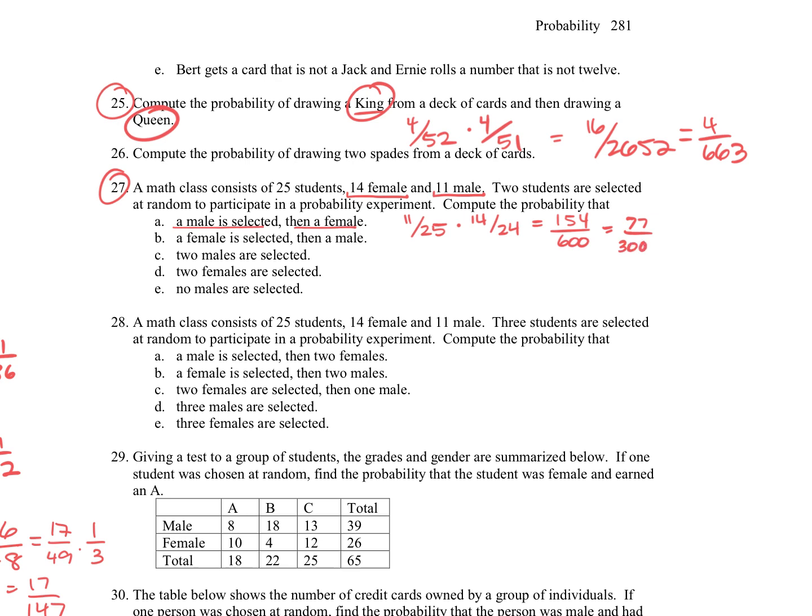Next, we have a female selected, then a male. Well, it's really the same situation. The numerators will look different for a second, because there's 14 female out of 25 times 11 out of 24 for the male. But it would still become the same answer, because you just multiply across. Sorry, 11 out of 24.